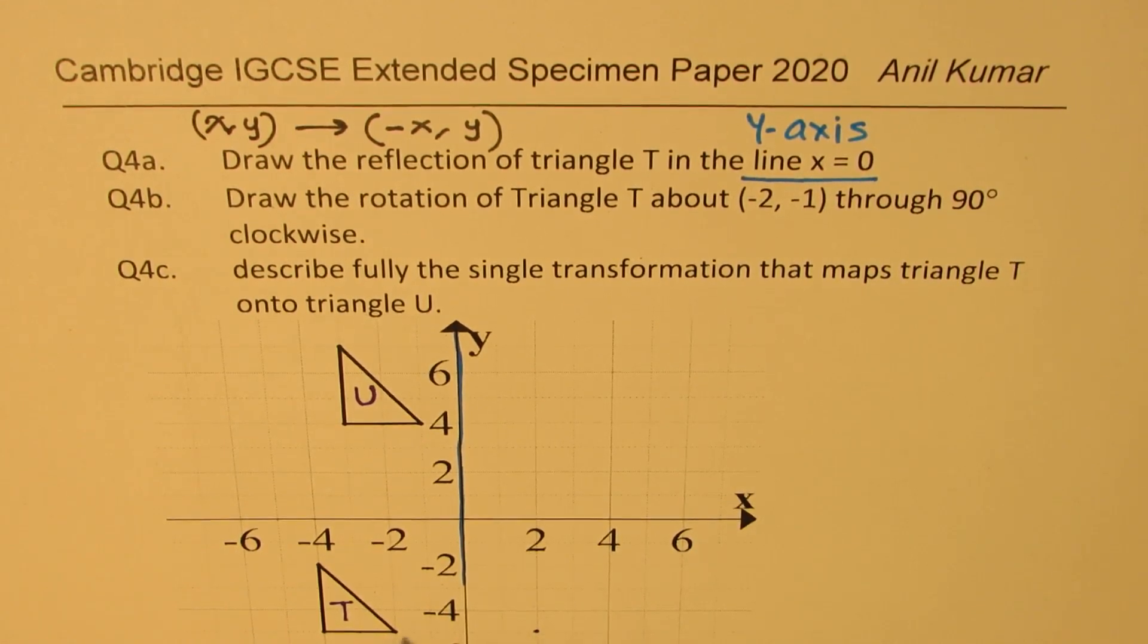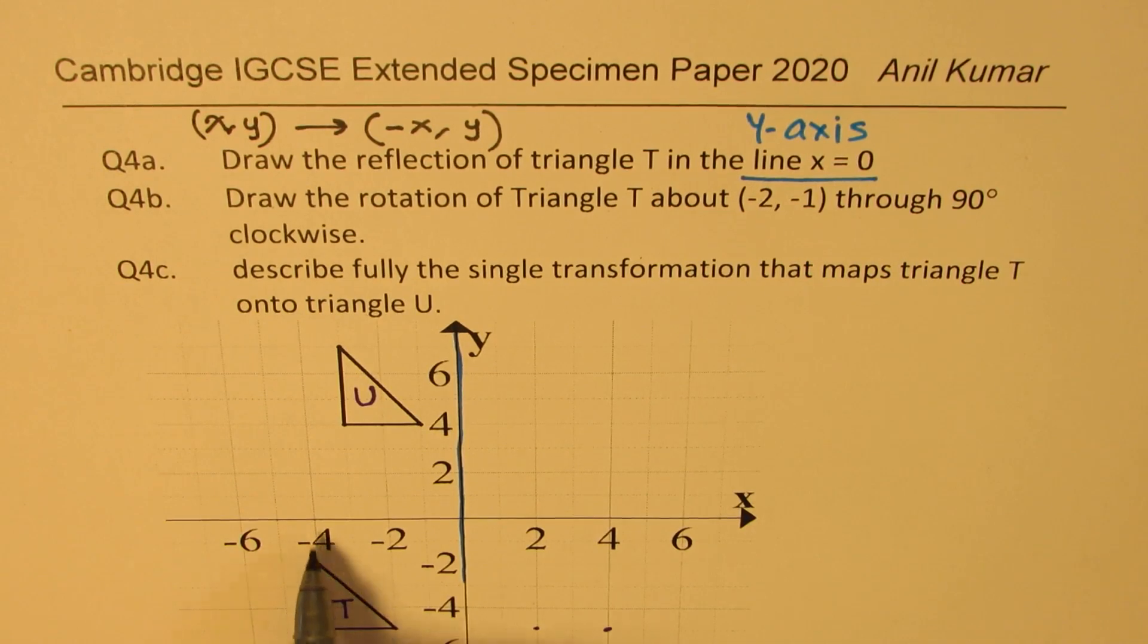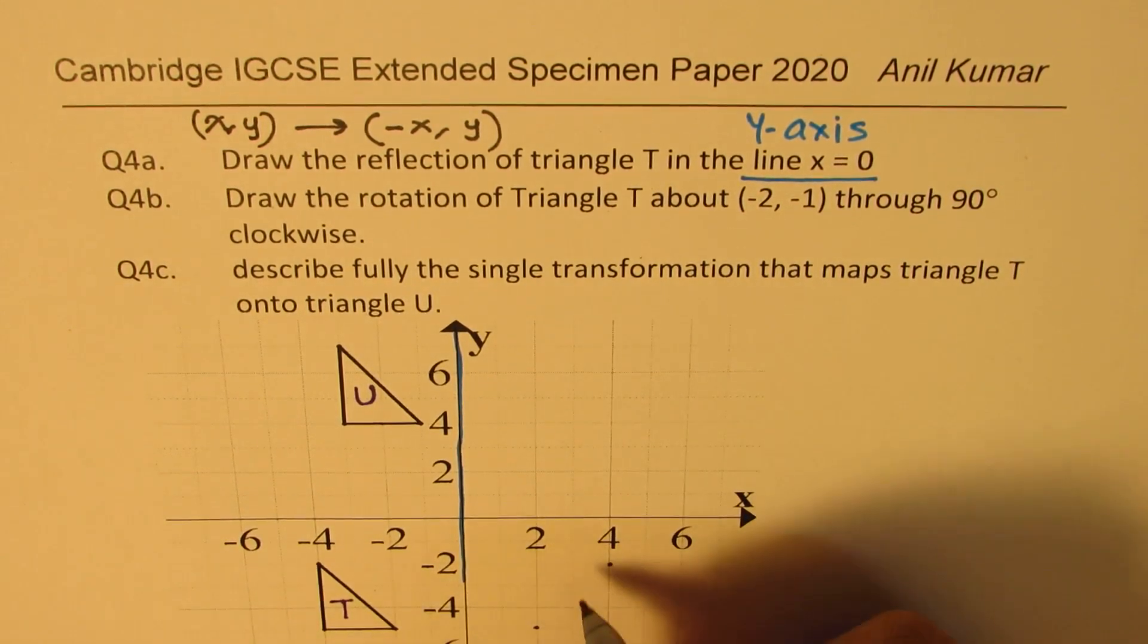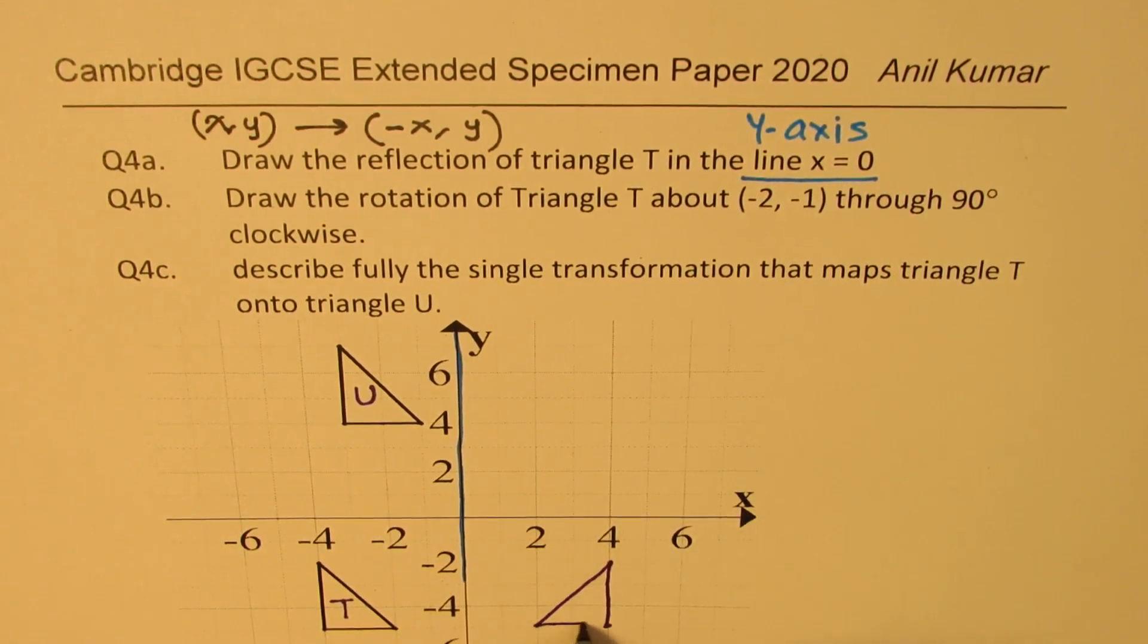The first one is at minus 2, it becomes 2. The second one is minus 4, it will be 4. And this vertex, which is at minus 4 again, the y value being minus 2, will now appear at 4. So we have a triangle here which has been reflected on the y-axis, which is x equals 0. I hope this part is absolutely clear.